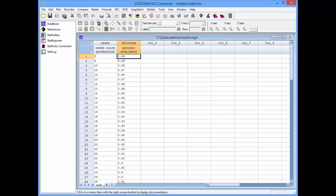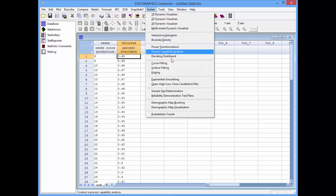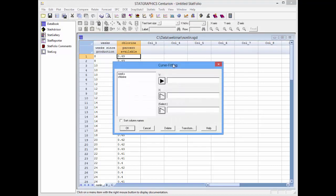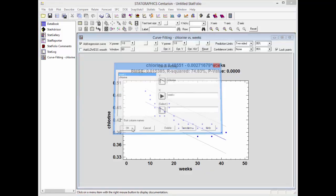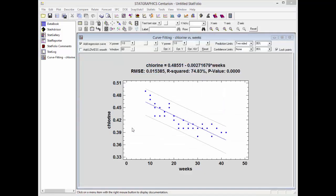To launch the statlet, I'll go to the main menu and select statlets, curve fitting. The Y variable is chlorine. The X variable is weeks. When the statlet window opens, it will start by fitting a straight line to the data.